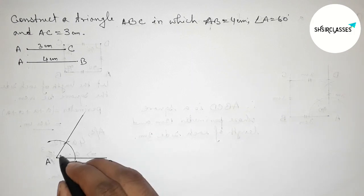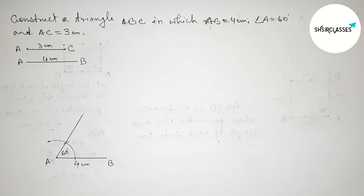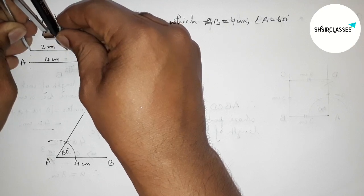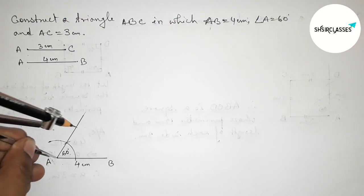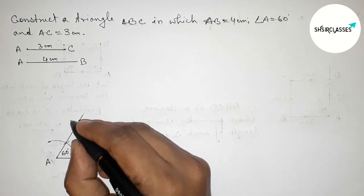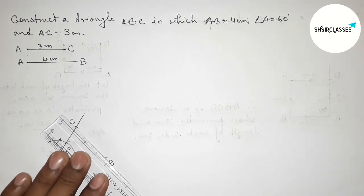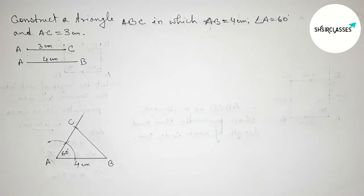So angle A equals 60 degrees. Next, taking the length AC equals 3 centimeters with the help of the compass. Putting the compass on point A and cutting the arc to mark point C on the angle line, so AC equals 3 centimeters.